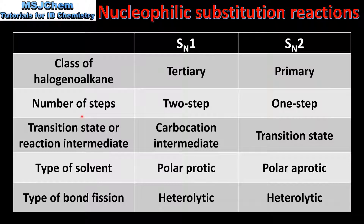Next is the number of steps. SN1 is a 2-step reaction. SN2 is a 1-step reaction. Next we have transition state or reaction intermediate. The SN1 mechanism involves the formation of a carbocation intermediate. The SN2 mechanism involves the formation of a transition state.